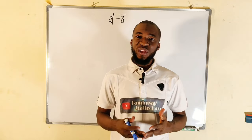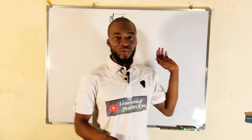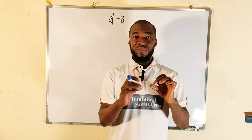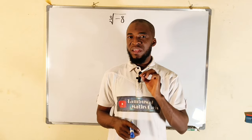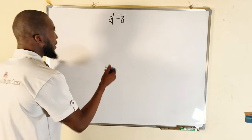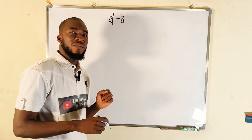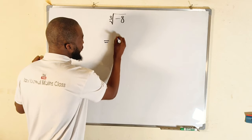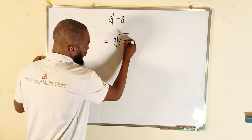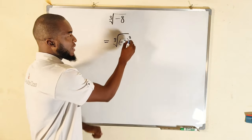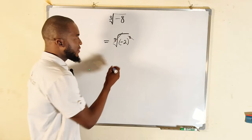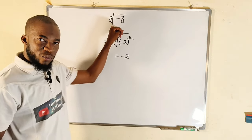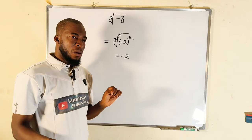Hello dear viewers. In this tutorial we are going to find the cube root of negative eight. In the set of real numbers, the cube root of negative eight is just negative two, because we can express negative eight as negative two to the power of three. So the cube root of negative two cubed simply leaves negative two, and hence negative two is the cube root of negative eight.